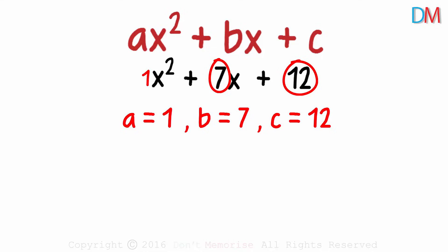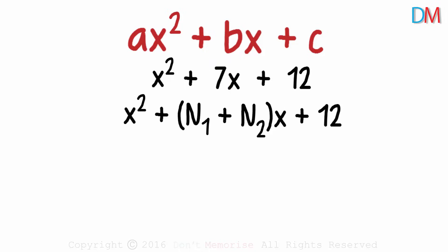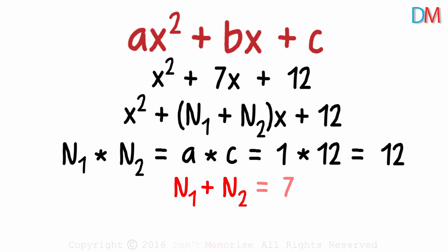One of the ways in which we factorized polynomials was by splitting the middle term. The technique was easy. We first write the coefficient of the middle term as the sum of two numbers n1 and n2. And the two numbers are such that their products equal the product of a and c. So can you think of two numbers such that n1 plus n2 is 7 and n1 times n2 is equal to 12?